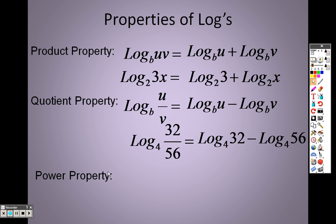The power property states that you can take the exponent and you just move it out in front when we're talking about logs. So what that means is I just take whatever the exponent is, in this case it's an n, and I just move it out in front. And once again, keep in mind every single one of these properties works in reverse.